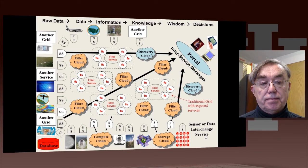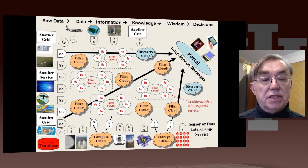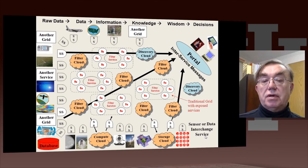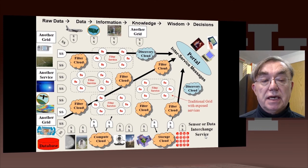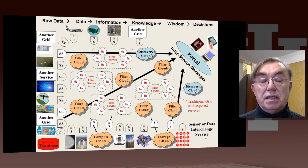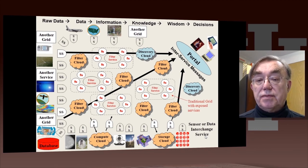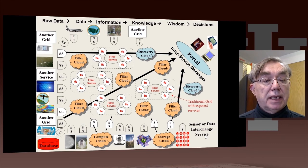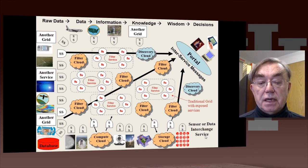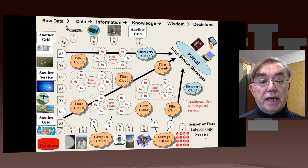This pipeline is illustrated here on a figure I drew a long time ago, which shows the raw data, the data, the information, the knowledge, and the wisdom-decisions pipeline. It has around the top, the left, and the bottom various sources of data.